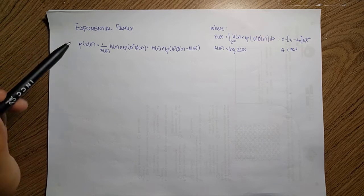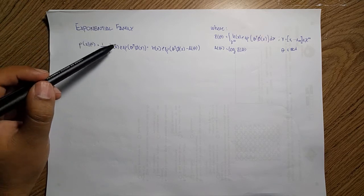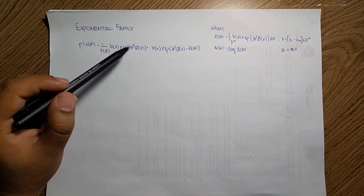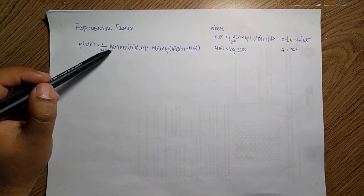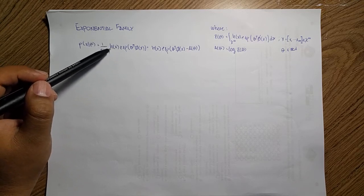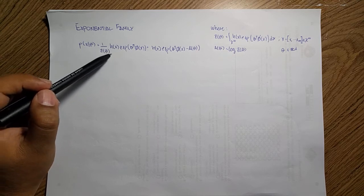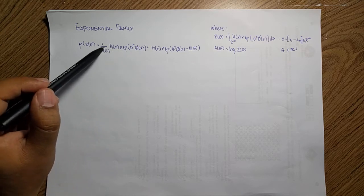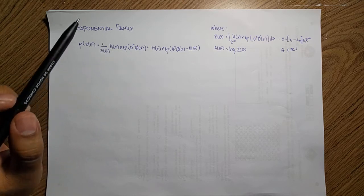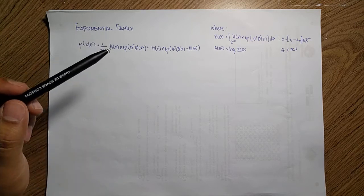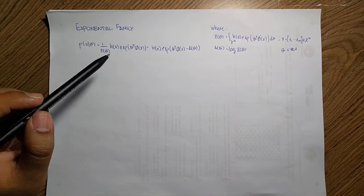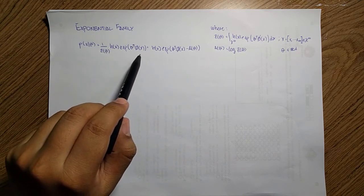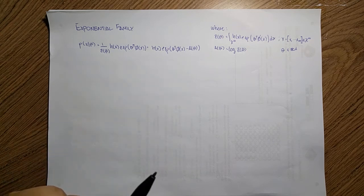The exponential family is nothing else than an exponential with respect to our data and our parameters, multiplied by some h(x) function that depends only on the data, and a partition function that is just the normalization function of the distribution such that it sums up to one when we do the summation or integral over the whole spectrum. It has this shape in which we push the normalization constants inside of the exponential, which is really useful.